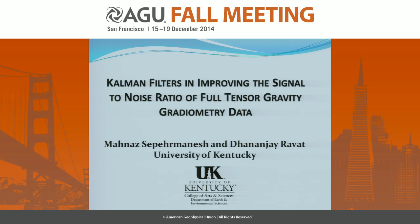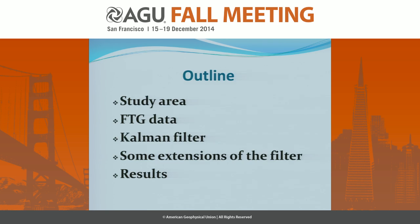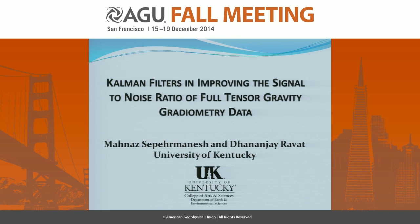My presentation today is about applying the Kalman filter and improving the signal-to-noise ratio of full-tensor gravity gradiometry data. Full-tensor gravity data is known for its high resolution, but it also has high noise in its components due to the dynamic nature of the platform used in data acquisition. Common low-pass filters usually remove small-scale and low-wavelength features in the area, so they are not very successful in processing. That's why we decided to apply the Kalman filter to investigate if we can improve the signal-to-noise ratio and process the FTG data.